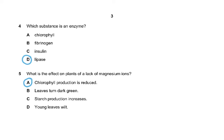Question 4: Which substance is an enzyme? Chlorophyll is a pigment. Fibrinogen is a plasma protein. Insulin is a hormone. Lipase was the only one which was an enzyme. So the answer would be lipase. Chlorophyll is a pigment, fibrinogen is a globular protein, it's not an enzyme, and insulin is a hormone.